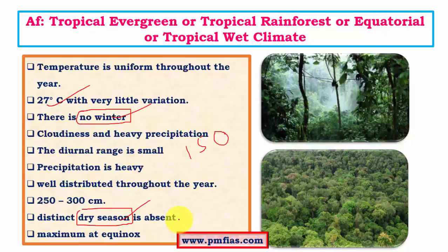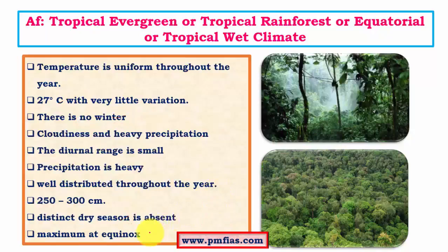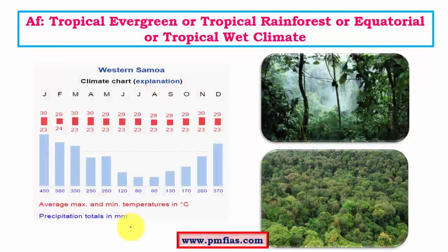Along with no winter, there is no distinct dry season. The maximum rainfall occurs during equinoxes. Equinoxes are when the sun is exactly overhead the equator, occurring in March and September, whereas solstices occur in June and December. In India, maximum rainfall occurs around August — after the solstice. But in equatorial rainforests, the maximum rainfall occurs during equinoxes in March and September, because that's when the ITCZ is exactly over the equator.